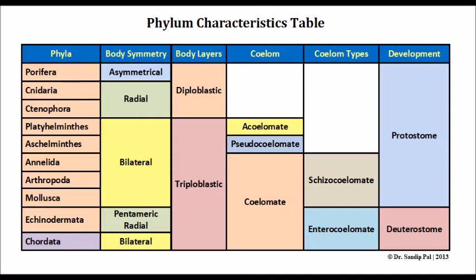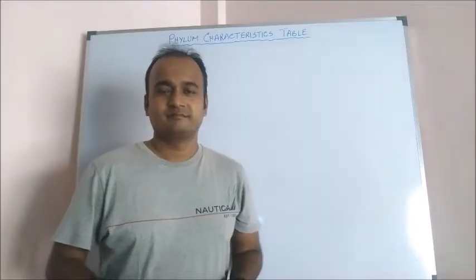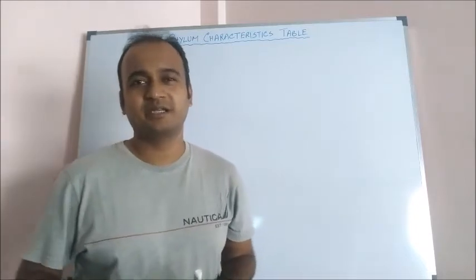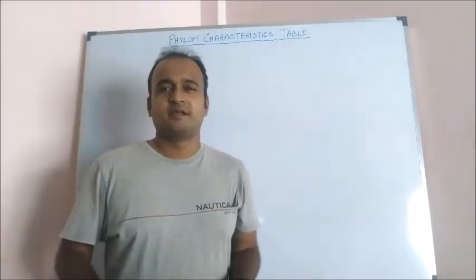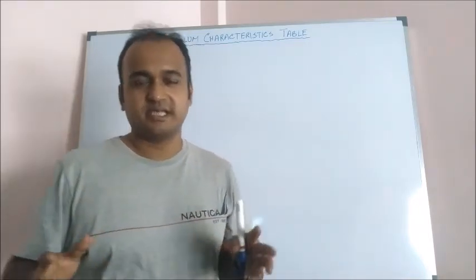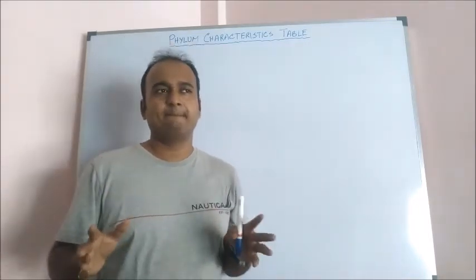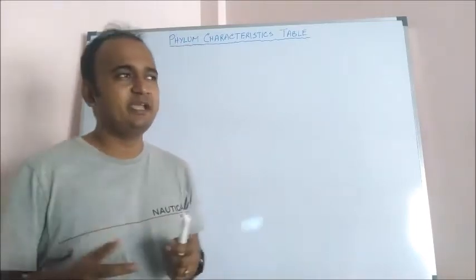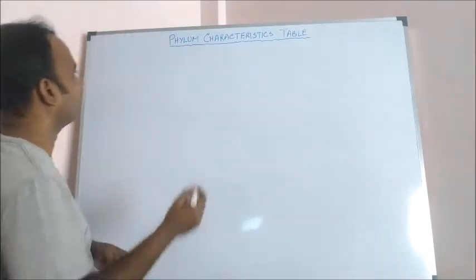Phylum characteristics table. Hello, I'm Sandipal and you are watching my YouTube channel Biologic Official. Today I'll discuss about phylum characteristics. There are 10 phyla: 9 invertebrate phyla and 1 chordate phyla. If I write those phyla, they are as follows.